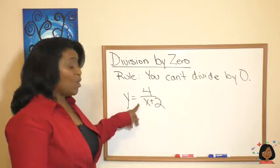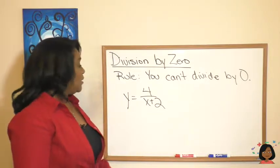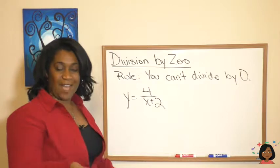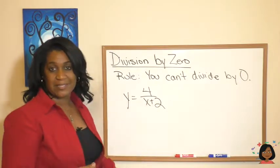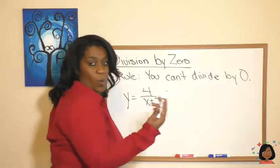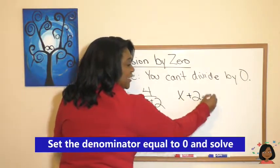I could create a chart or a table where I get values for x so I can plot y, except there is one value that does not work for this. Remember, if the rule is you can't divide by zero, how do we find out what number cannot be here?